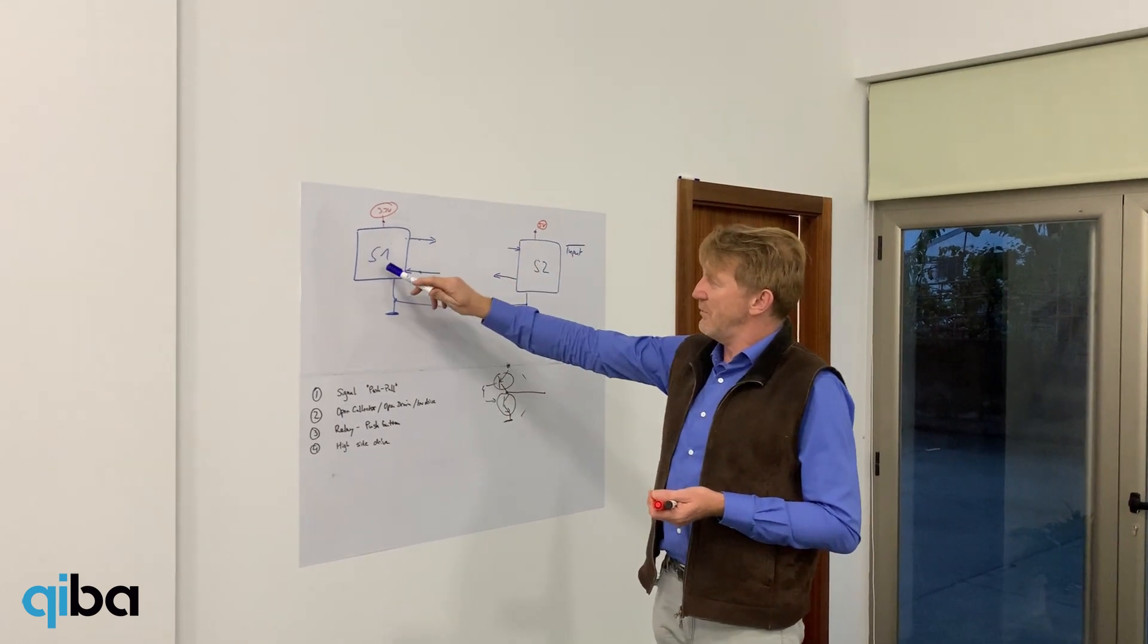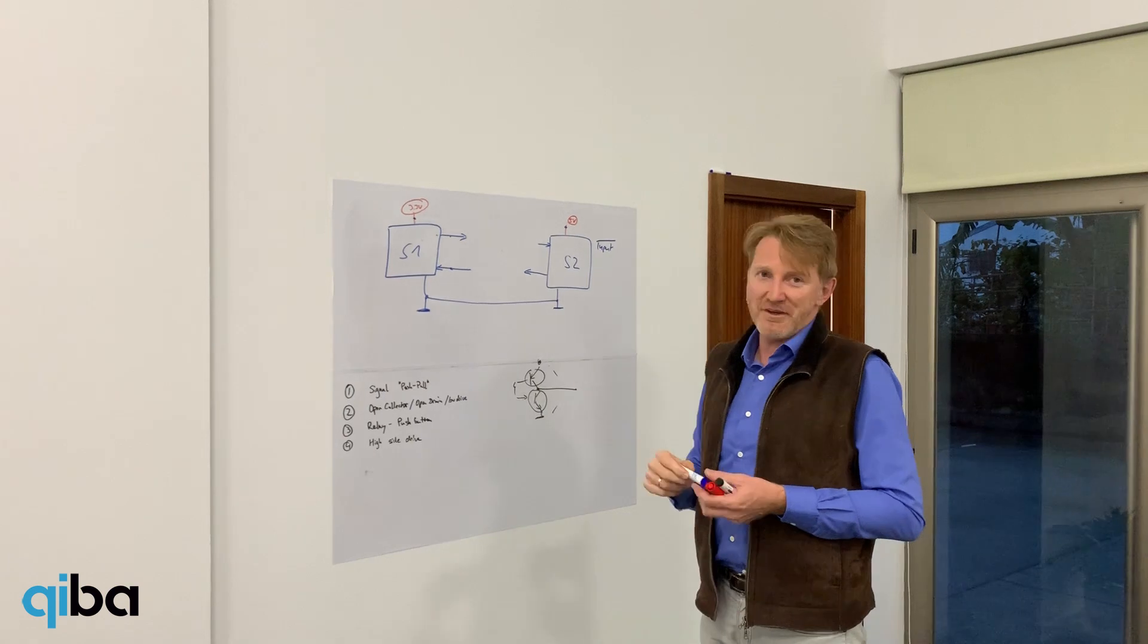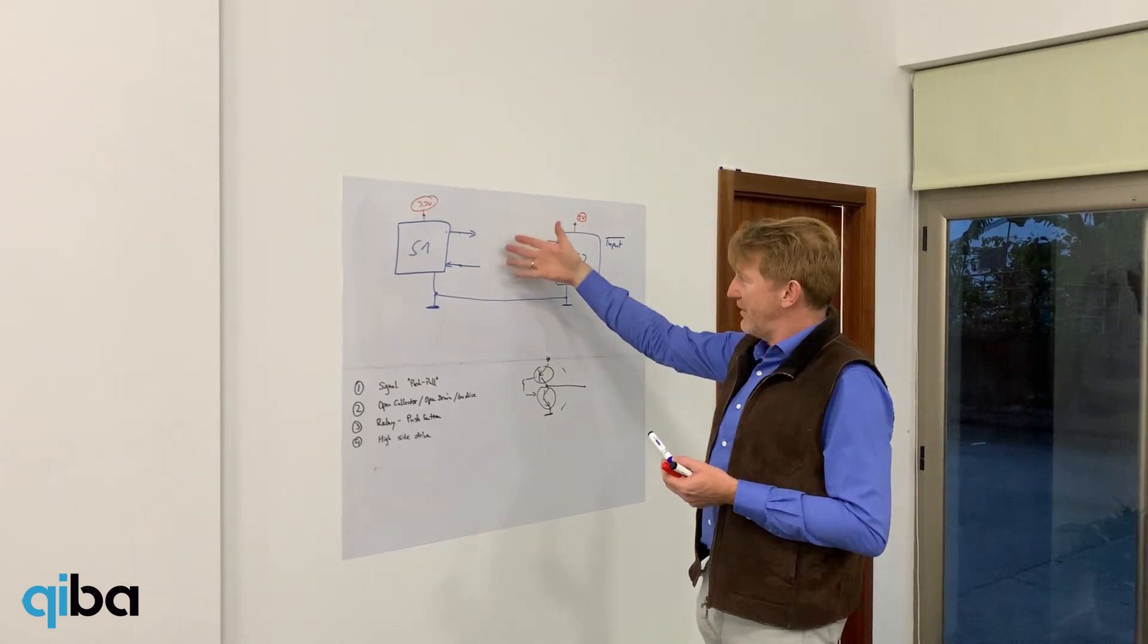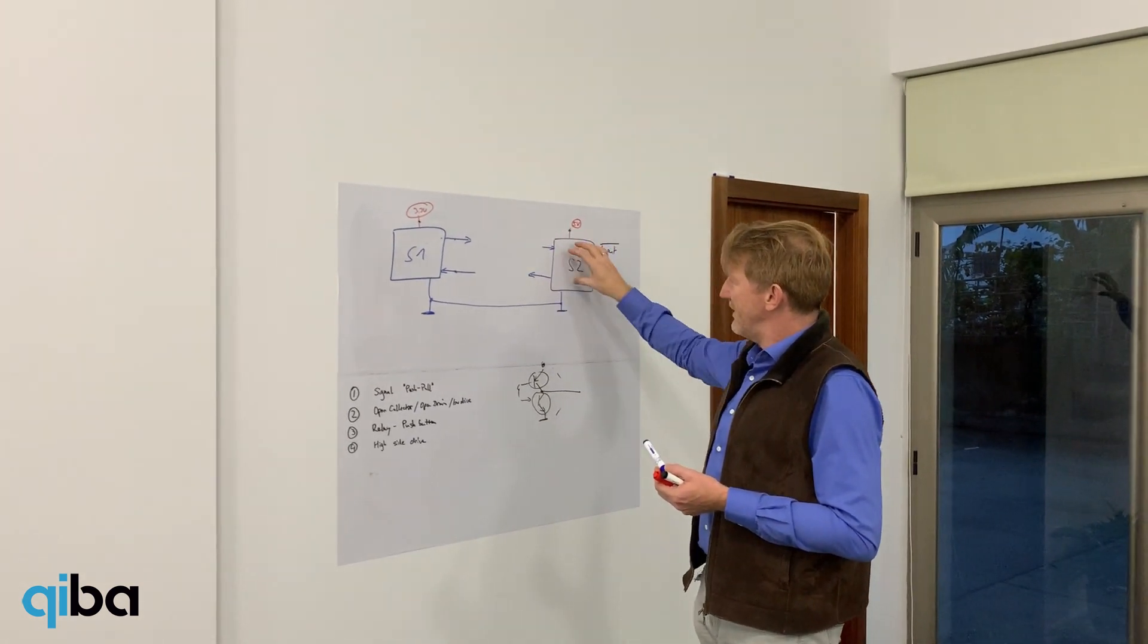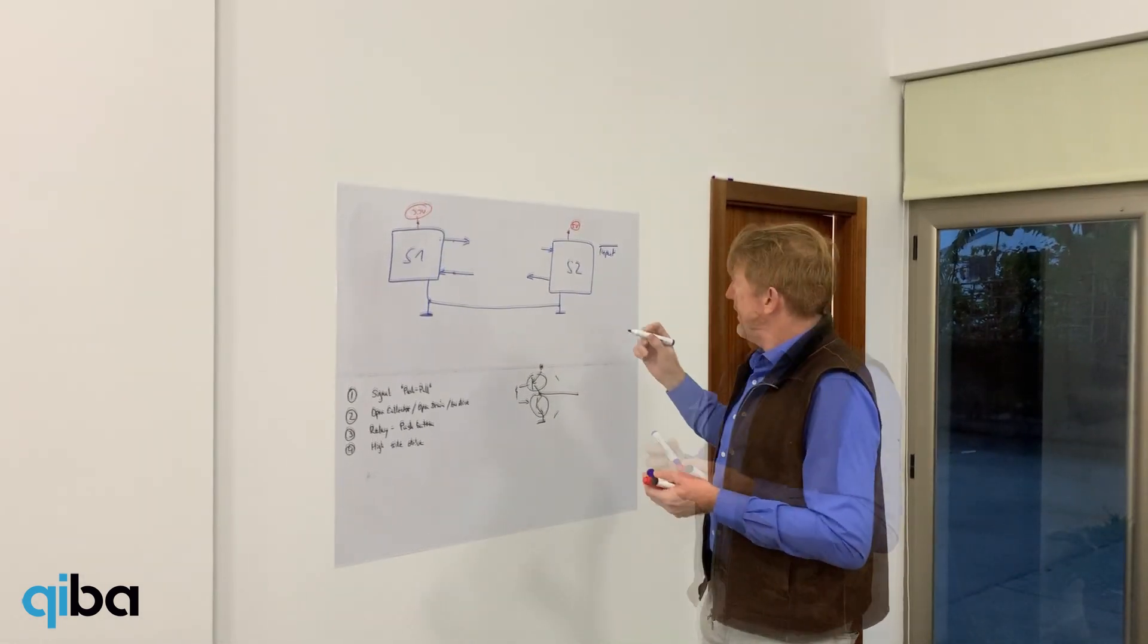So we have two devices here, one System 1, one System 2, 5-volt powered and 3-volt powered. And if a connection breaks or something like that, what we want is that one side can see the open input as being inactive.